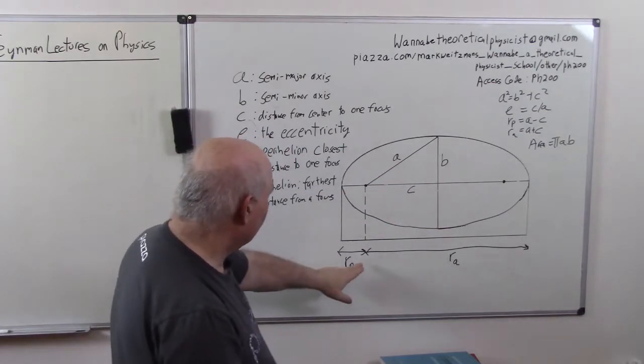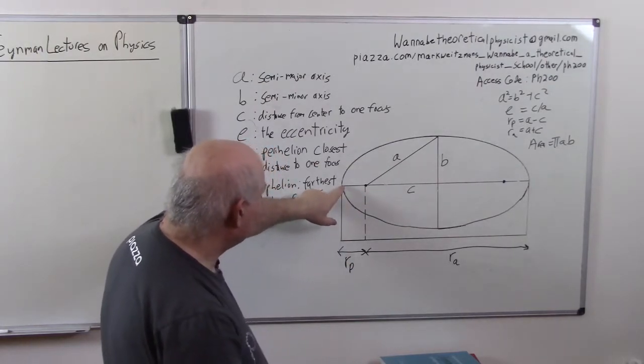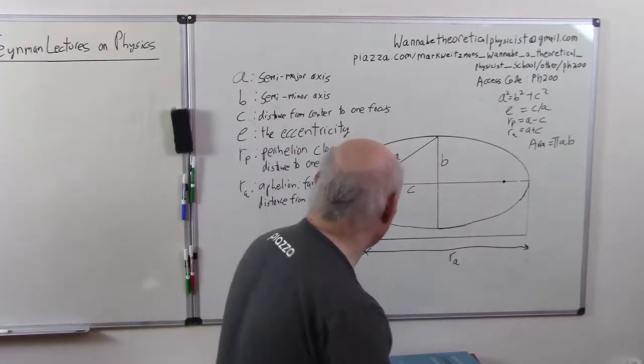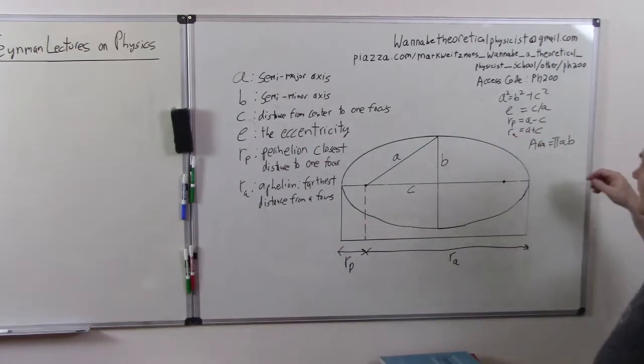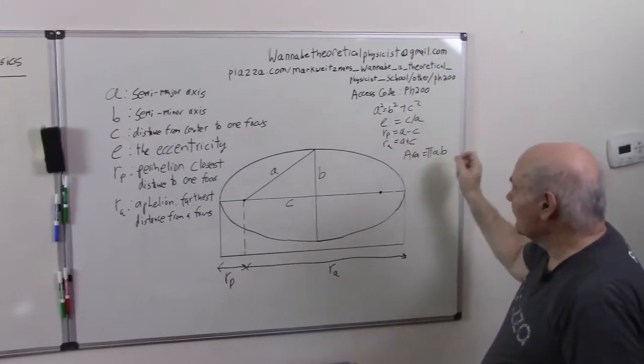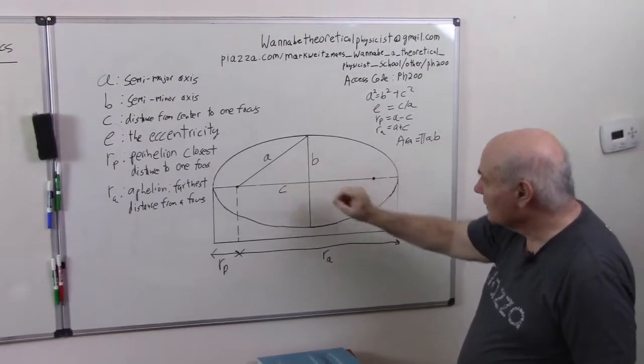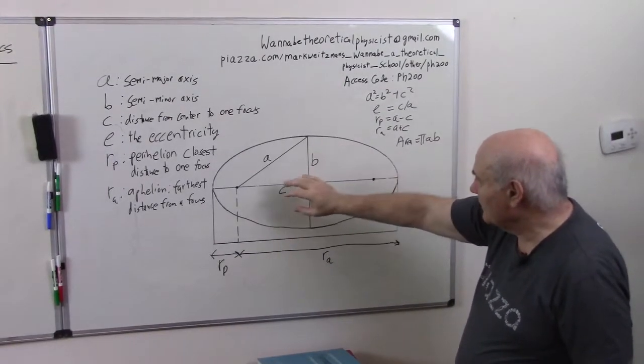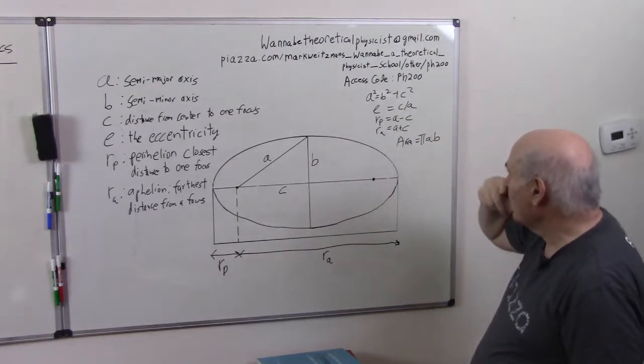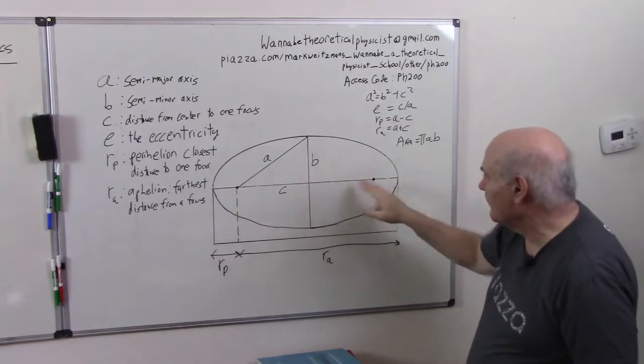RP, this small distance, is the perhelion distance. This is the sun, think of this as the sun and this is the planet. This is the closest approach right here, and RA is the farthest approach when it's right over there. From the Pythagorean theorem, A squared is B squared plus C squared. The eccentricity is defined as the ratio of C to A. If this was a circle, B and everything would be the same, and so the ratio would be zero. In other words, the foci would both be at the center.